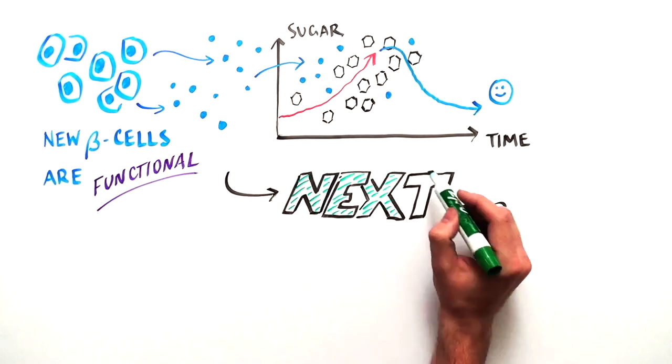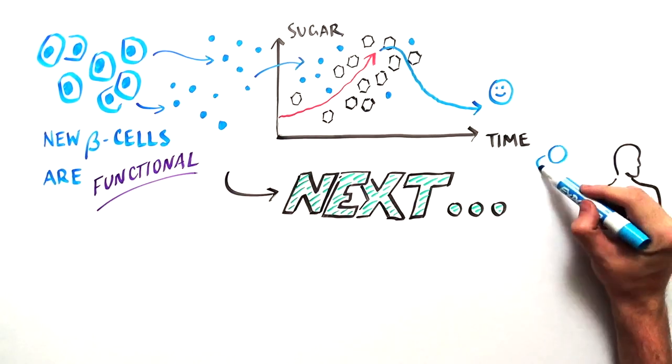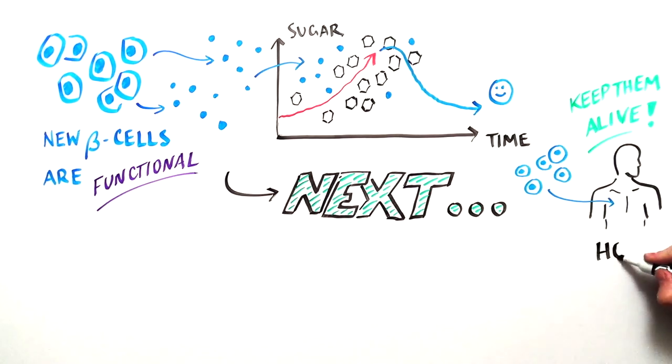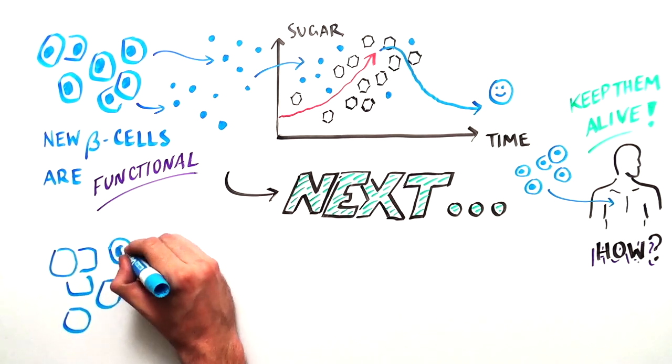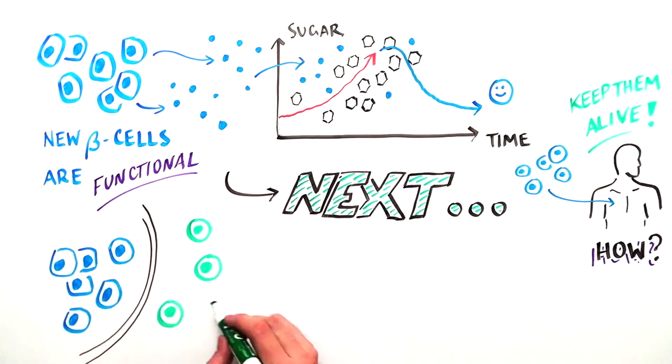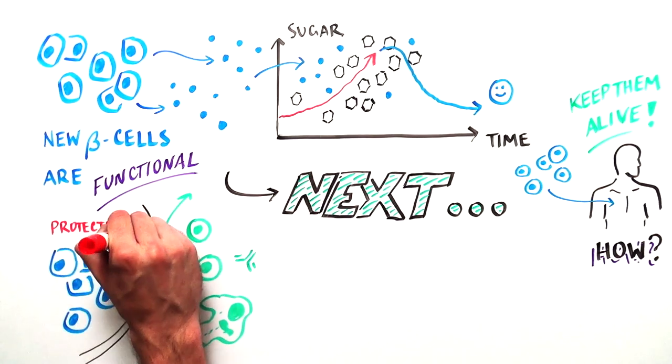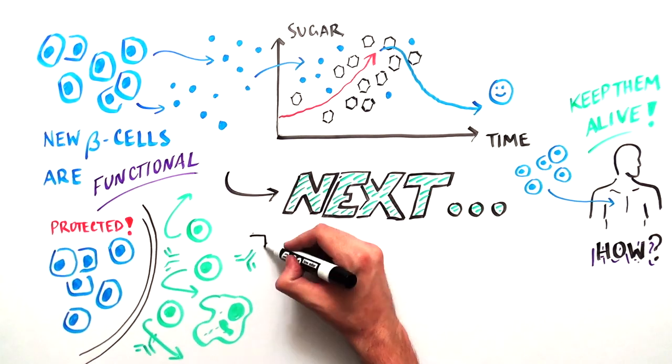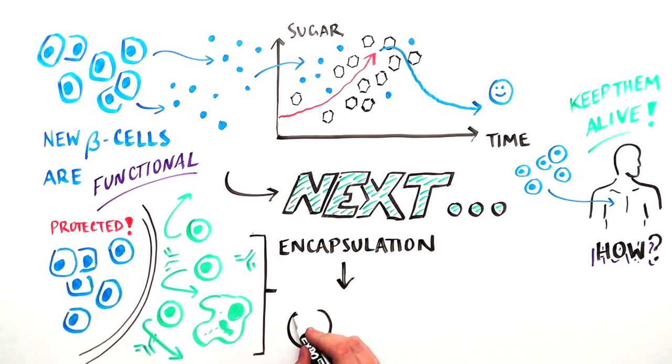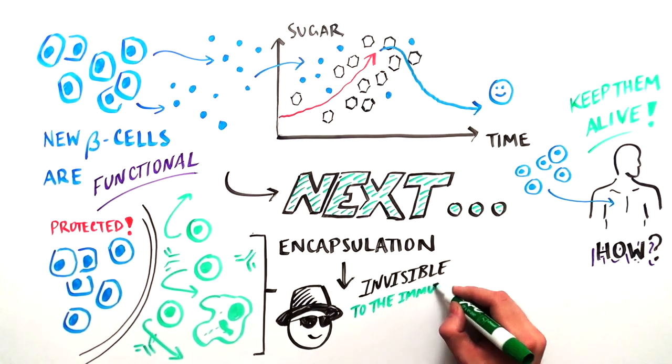Scientists are now solving a new challenge. How do we introduce these cells into the body and keep them alive? One challenge is to protect them from the immune system, which is responsible for killing beta cells in type 1 diabetes. One possible solution is to use encapsulation or modify the surface of the cells to make them invisible to the immune system.